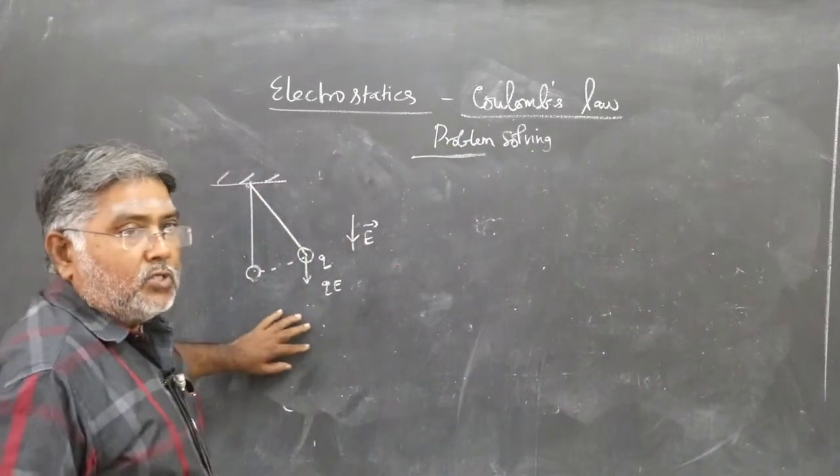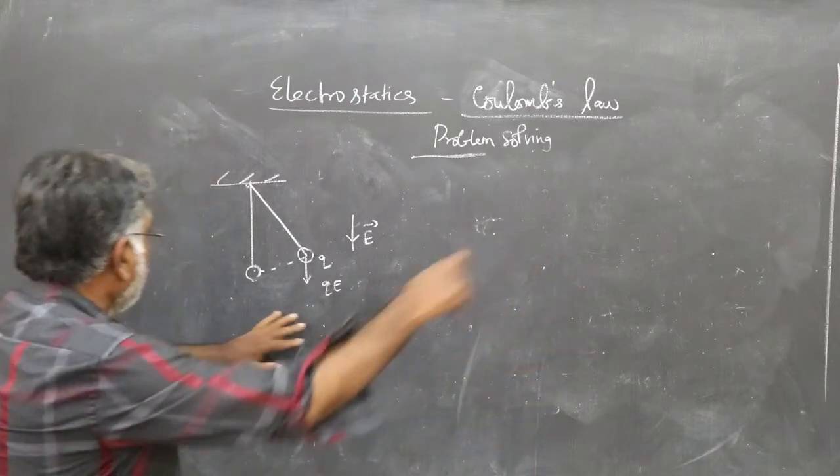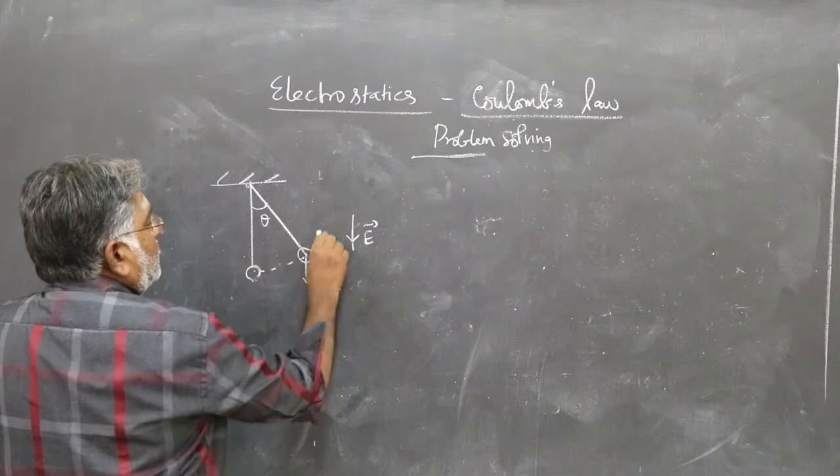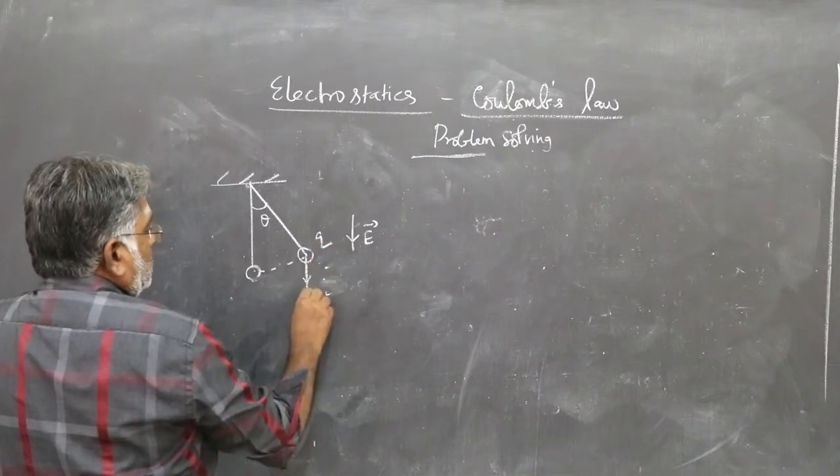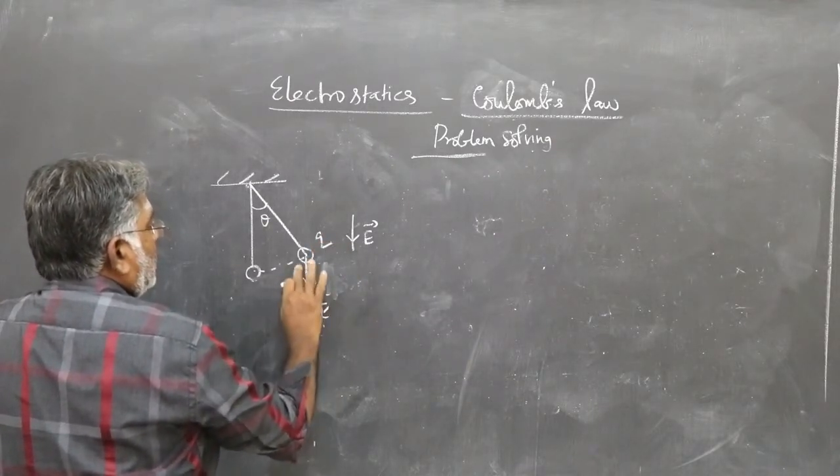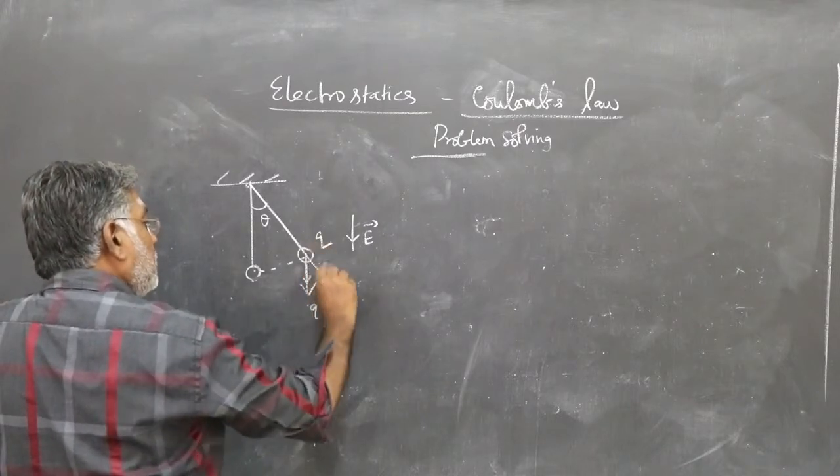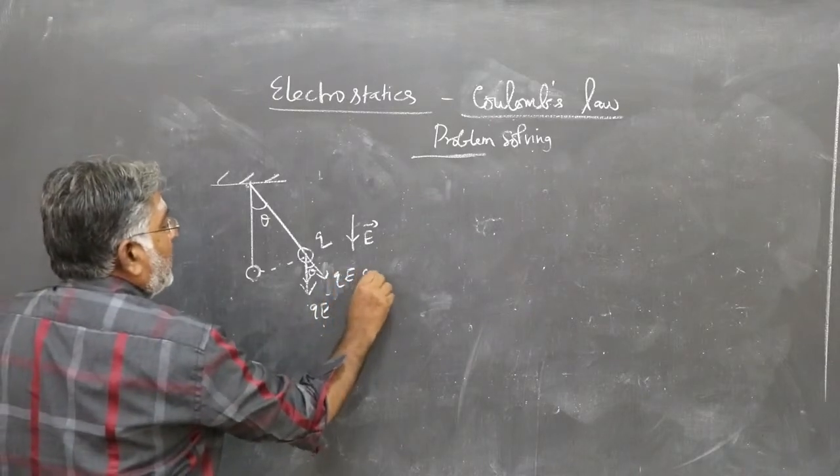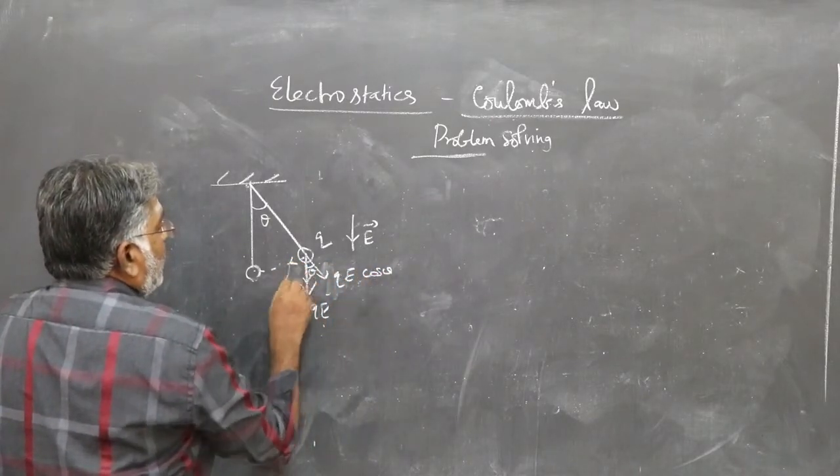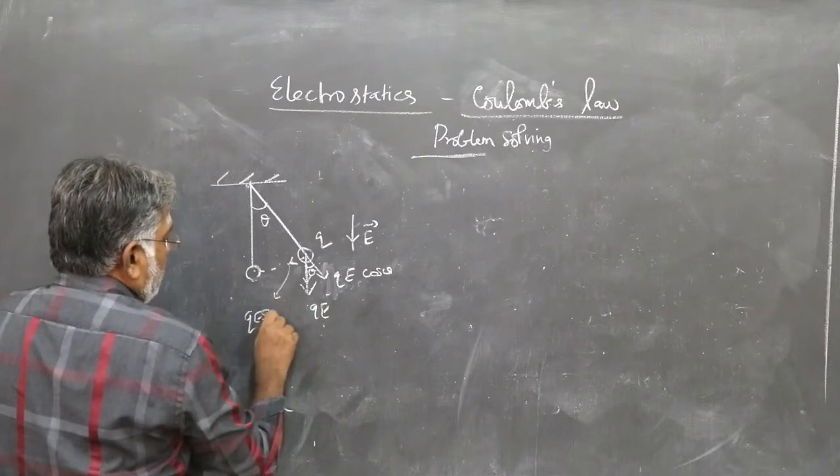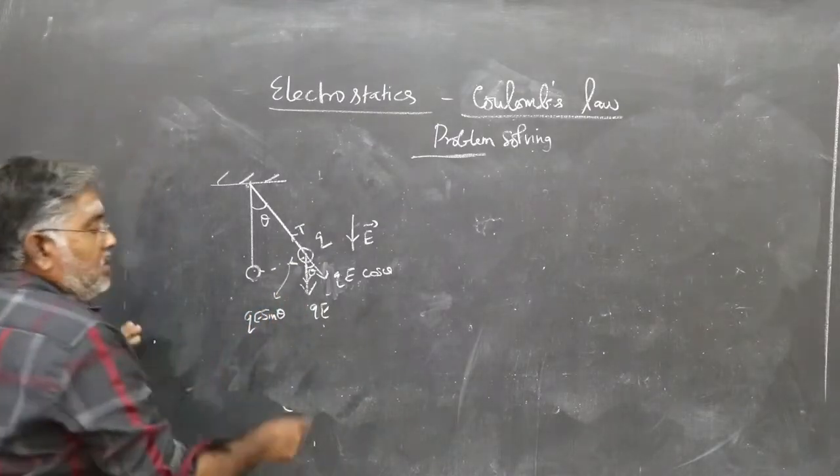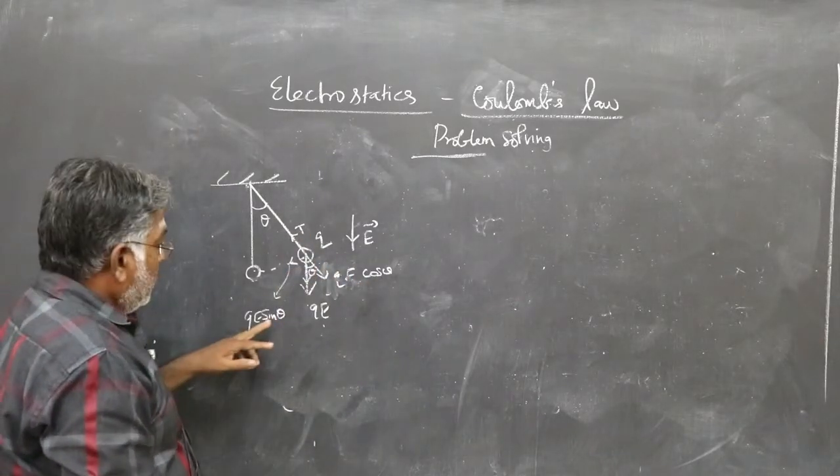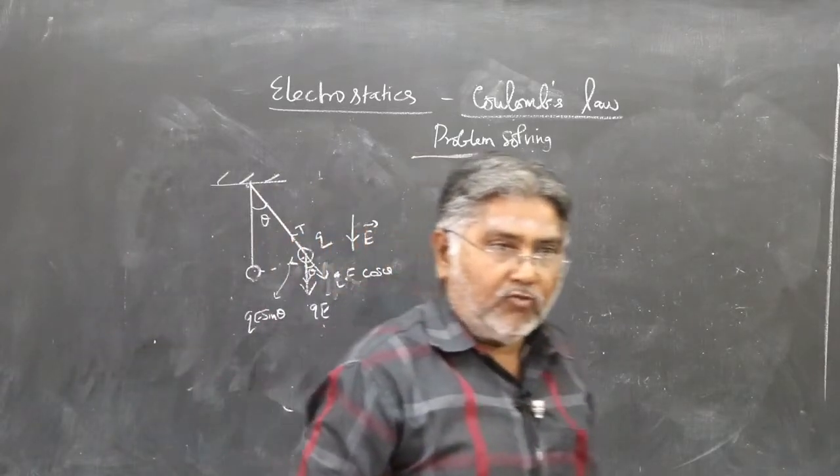You find out the time period of oscillation. Let's say this angle is theta. This is Q here. This force is QE. You resolve this QE into two components. This also will be theta. This will be QE cos theta. This force will be QE sin theta. QE cos theta and the tension will balance each other. QE sin theta serves as a restoring force.